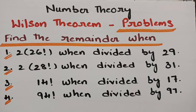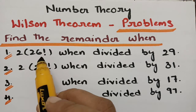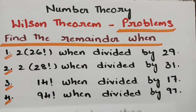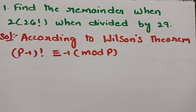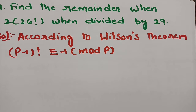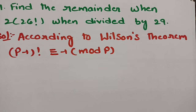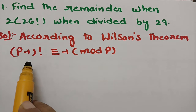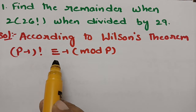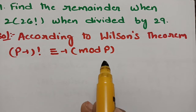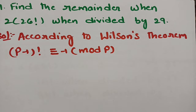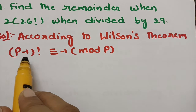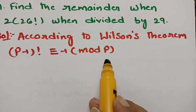Here is the first problem: find the remainder when 2 × 26! is divided by 29. As I said in my previous video about the Wilson theorem — according to Wilson's theorem statement, the result is: (P − 1)! ≡ −1 (mod P). You should watch my previous video for the proof. The final result is: (P − 1)! ≡ −1 (mod P).